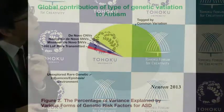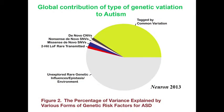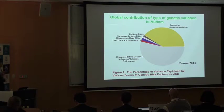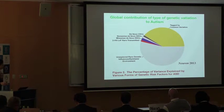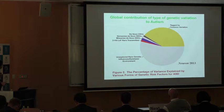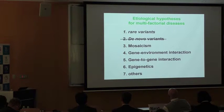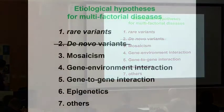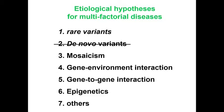After this, de novo CNVs and de novo SNVs certainly contribute to the etiology of autism, but the extent of the effect is not so high — only around 5%. Major contribution is caused by common variants, and others are unknown. This is one case of the de novo hypothesis. We must also test the rare variant hypothesis, mosaicism, gene-environment interaction, gene-to-gene interaction, and epigenetics one by one. So what does ToMo have to offer for testing these hypotheses?